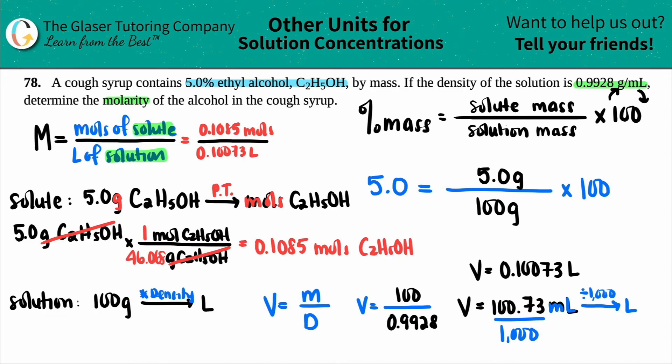And finally, you get your answer. 0.1085 divided by 0.10073. Looks like since this is the lowest sig fig amount, I technically, if we're doing sig figs, I technically should have two sig figs. So this would be 1.1 molarity or moles over liter.